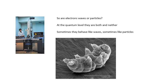It depends on the experiment that you're doing. Some people would say everything is actually waves. I think of an electron as a particle that can behave like a wave. Nevertheless, it's wave-particle duality — it depends how you look at it. Sometimes they behave like waves; for example, in an electron microscope that relies on the wave-like properties of electrons. Sometimes they behave like particles.